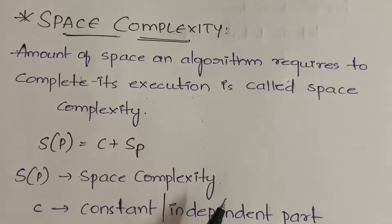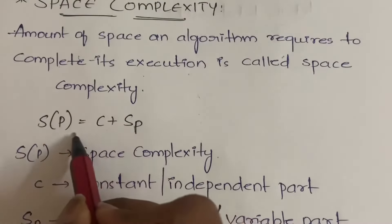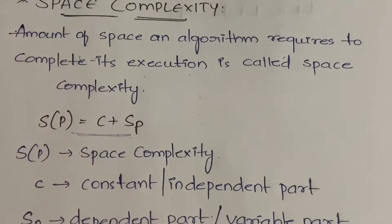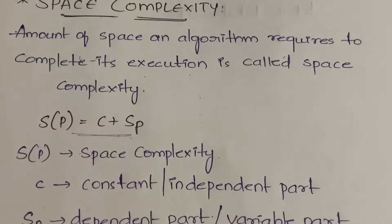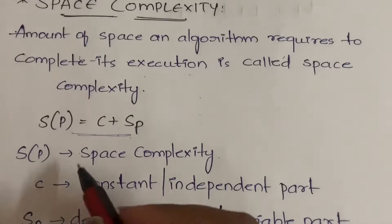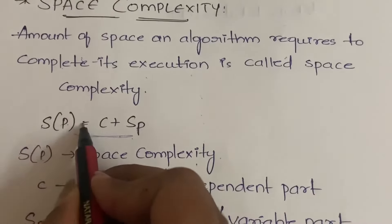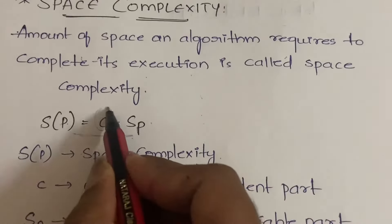Now let us see how to calculate. The space complexity of an algorithm is calculated by using this formula: S(P) = C + SP. S(P) is nothing but the space complexity of an algorithm. C means the constant part.